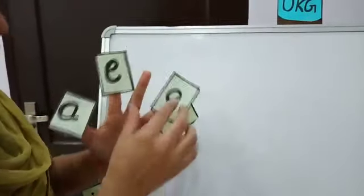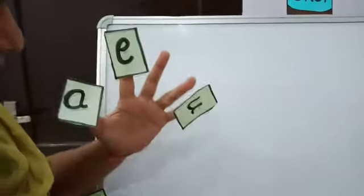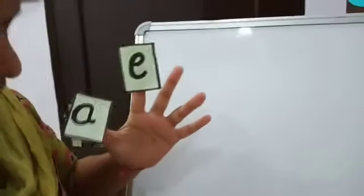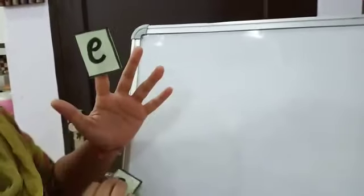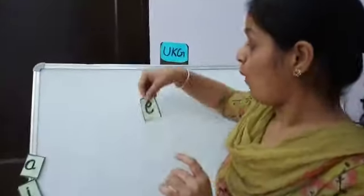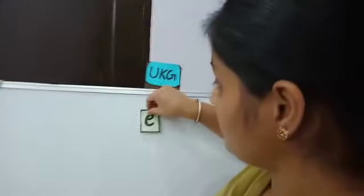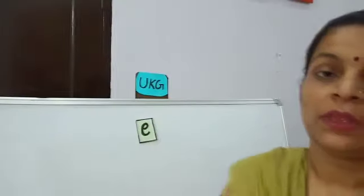First of all we will learn about it — its sound. Vowel E. I will tell you what is its sound. Its sound is A.